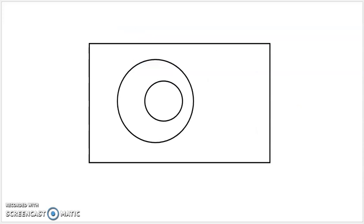You can also have circles within circles. Again, sticking with the animal theme — the universal set being the set of animals — let's say that the big circle is the set of dogs, and the inner circle is the set of golden retrievers. What this means is that all golden retrievers are dogs — that's what it means when the golden retriever circle is within the dog circle.